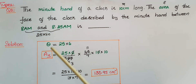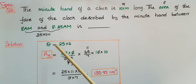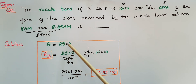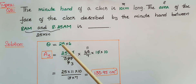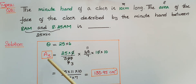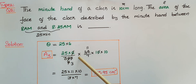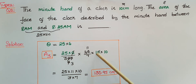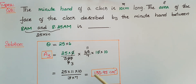In 25 minutes the angle theta is equal to 25 into 6 — since in one minute the hand makes 6 degrees — that is 150 degrees. The area of the sector is equal to (25 × 6)/360 × (22/7) × 10 × 10, which gives 130.95 centimeters squared.